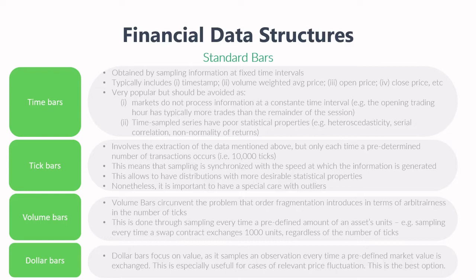Volume bars circumvent the problem that order fragmentation introduces in terms of arbitrariness in the number of ticks. This is done through sampling each time a predefined amount of an asset's units, such as sampling every time a swap contract exchanges 1,000 units, regardless of the number of ticks.